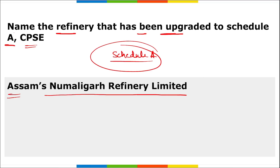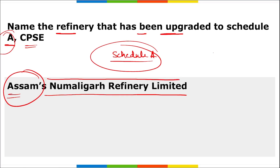Numaligad Refinery Limited in Assam has been upgraded to Schedule A. There is also Schedule B — medium-sized CPSEs with good financial performance but may not meet all Schedule A criteria. Schedule C are smaller CPSEs with moderate performance requiring higher levels of oversight. Schedule D enterprises have comparatively weaker performance and usually require central government approval for major decisions including investment.